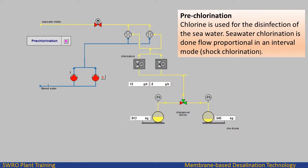Chlorine is used for the disinfection of seawater. The seawater chlorination is done flow-proportionally in an interval mode, known as shock chlorination.